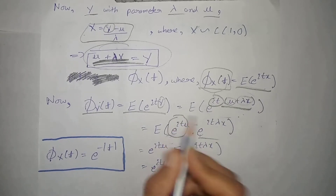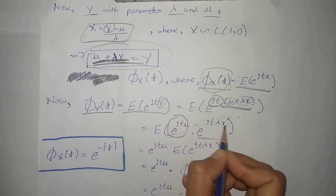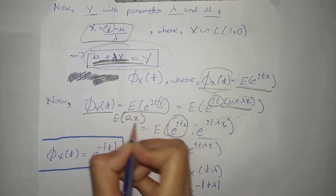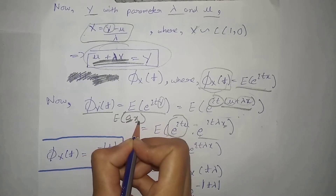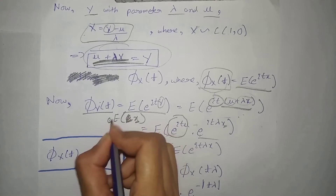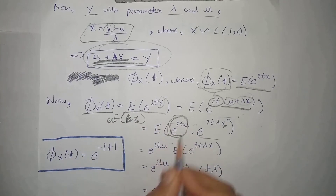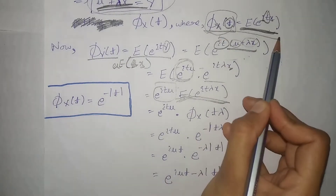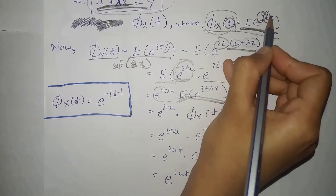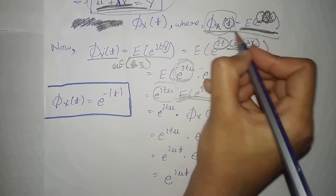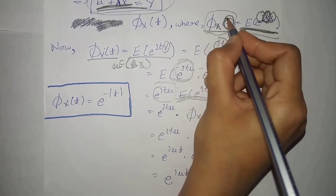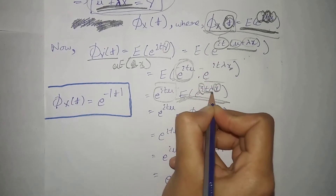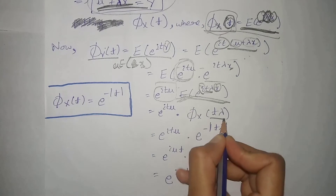That value goes outside the expectation. Now if we compare this with the earlier characteristic function expression — setting aside iota t x — whatever term remains corresponds to the characteristic function notation. Similarly here, setting aside iota lambda t x, the remaining term gives us the characteristic function notation for lambda t.